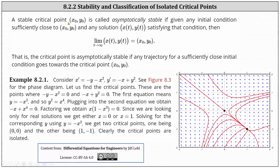A stable critical point (x₀, y₀) is called asymptotically stable if, given any initial condition sufficiently close to (x₀, y₀) and any solution x(t), y(t) satisfying that condition, the limit as t approaches infinity of (x(t), y(t)) equals the critical point (x₀, y₀). That is, the critical point is asymptotically stable if any trajectory for a sufficiently close initial condition goes toward the critical point (x₀, y₀).